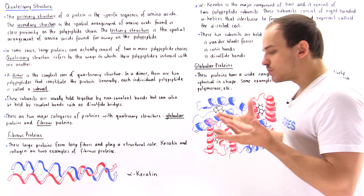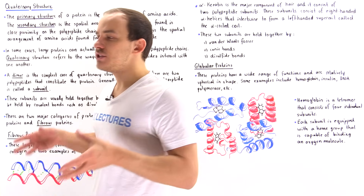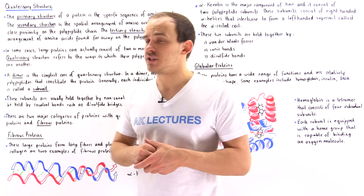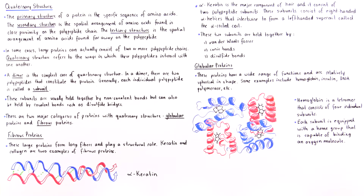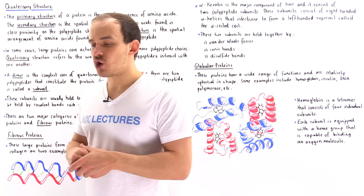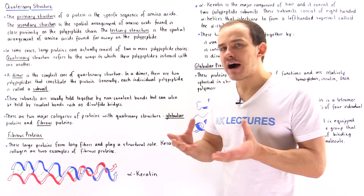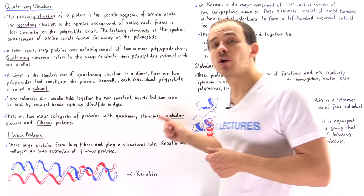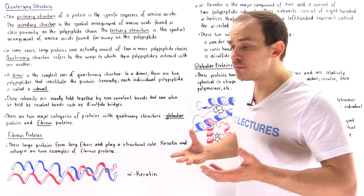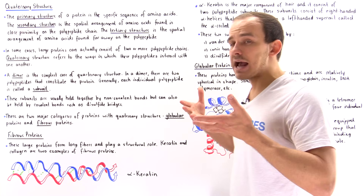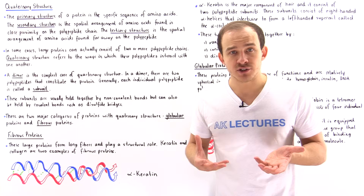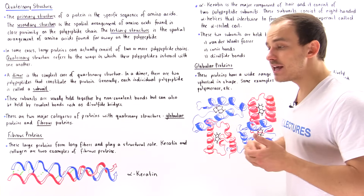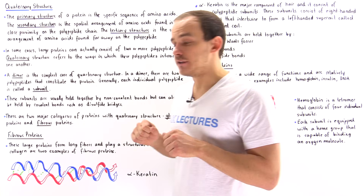All proteins in our body can be categorized into two categories: fibrous proteins, also called structural proteins, and globular proteins. A fibrous protein consists of long fibers that play a structural role in the cell and in our body. Some examples are intermediate filaments found in our cytoskeleton, collagen found in connective tissue such as bone, and keratin found in hair and nails, as well as in the wool, horns, and claws of animals.